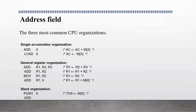The second organization is general register organization. In this, multiple registers are used to store the data — the operands reside in the general purpose registers. The instruction format will have either two address or three address fields. These address fields may refer to an operand in memory or to the address of a register where data are stored in general purpose registers.